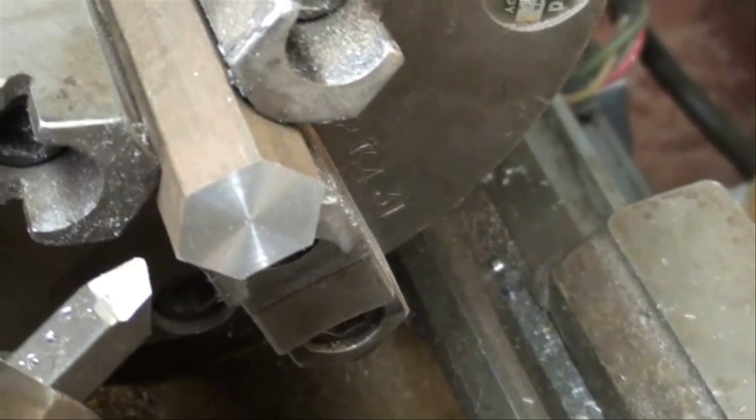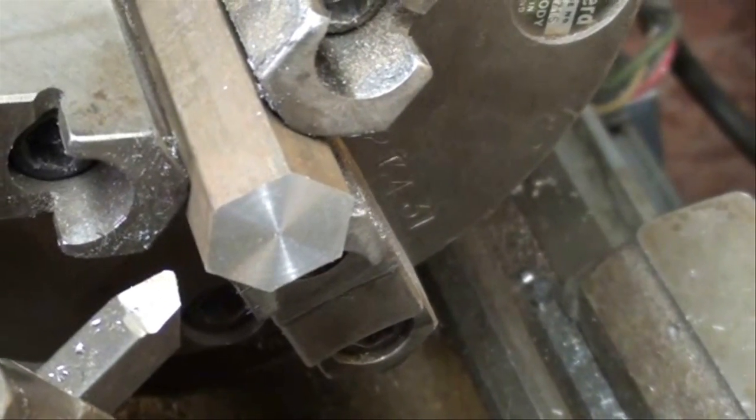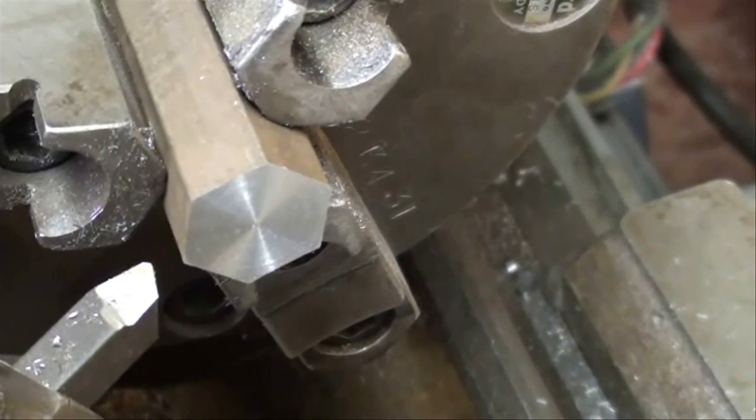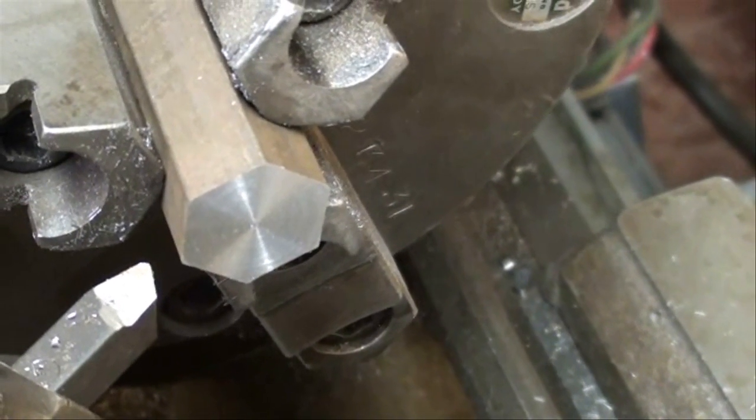This plumb bob is going to be 3 inches long more or less, it's not very critical. I started with a piece of material that was just a little bit over 3 inches. This is just common cold rolled 1018 steel.